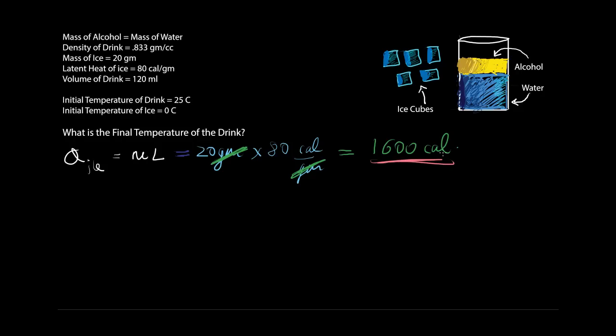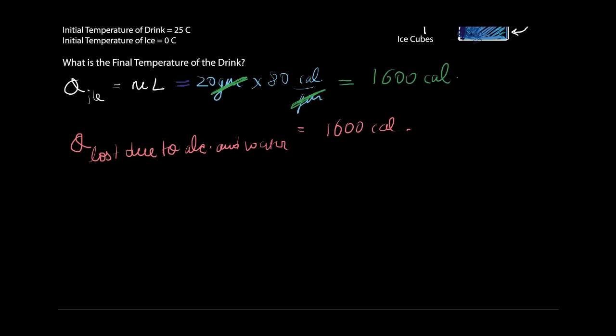This is the heat gained by the ice. So this must be the heat lost due to alcohol and water. That must be also 1600 calories. So what is the heat lost due to alcohol and water? Well, I can conclude that this is the heat lost by alcohol plus the heat lost by water. That must be 1600 calories.